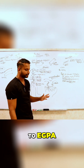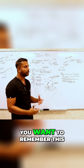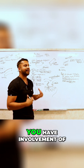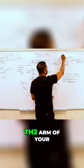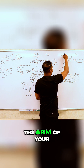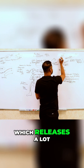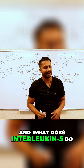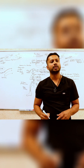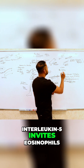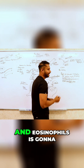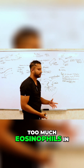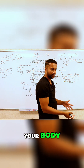When it comes to eGPA, you want to remember this: apart from being a vasculitis, you have involvement of the Th2 arm of your immune system, which releases a lot of interleukin-5. And what does interleukin-5 do? Interleukin-5 invites eosinophils, and eosinophils are going to invite macrophages.